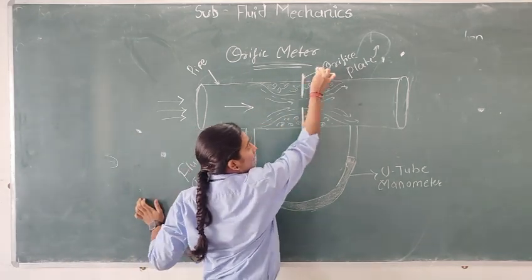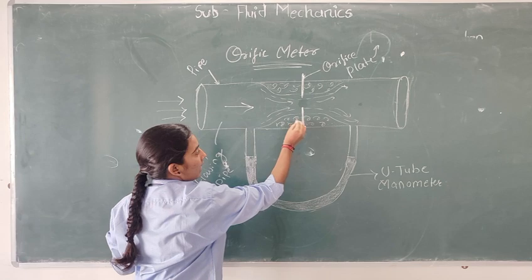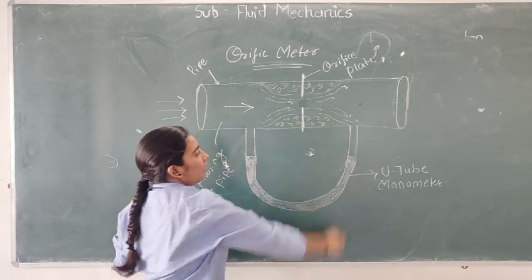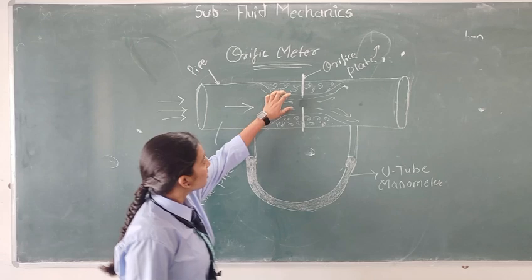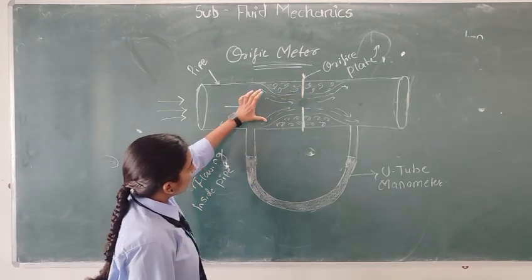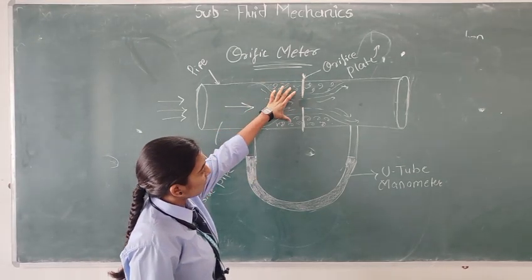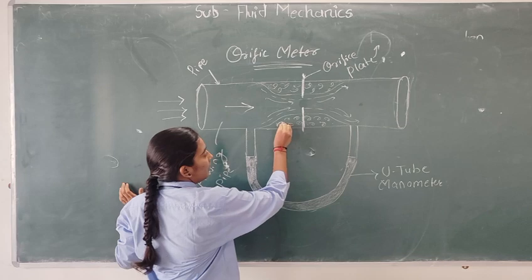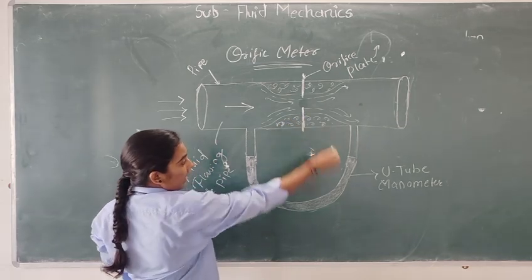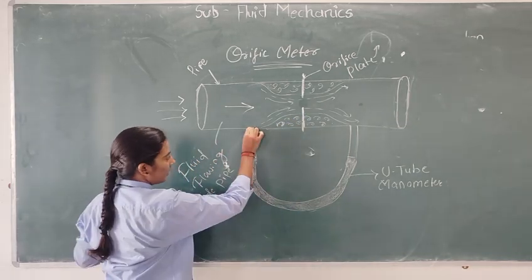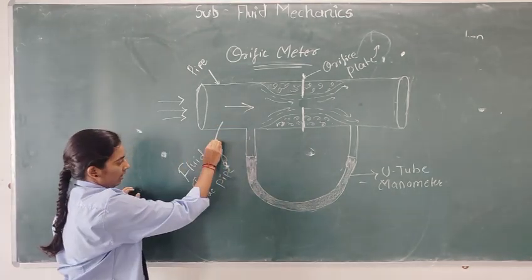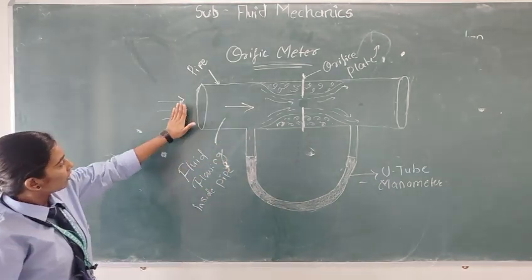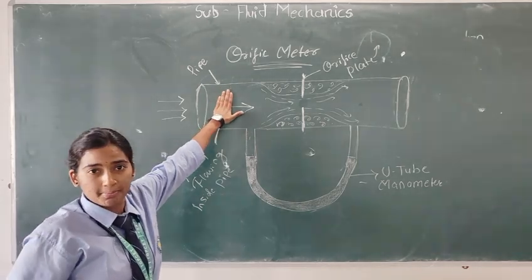This is the orifice plate and the remaining part, the remaining part of its quadrant. It is U-tube diameter and the fluid is flowing through inside of the pipe.